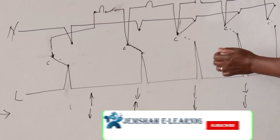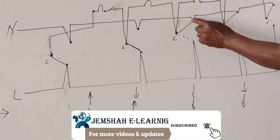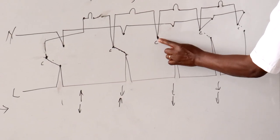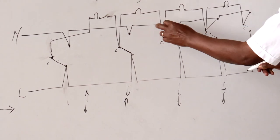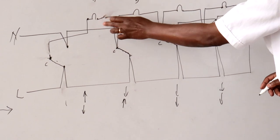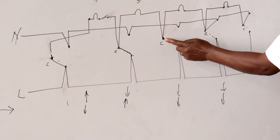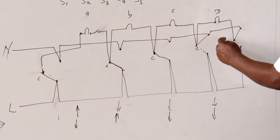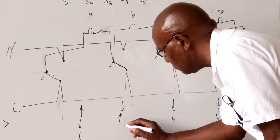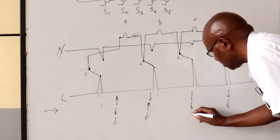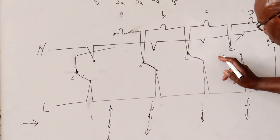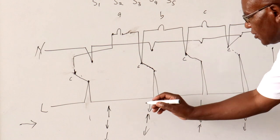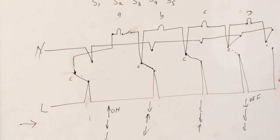Then I move to the next switching position. The path for lamp B to the neutral was through that switching connection. When I flip this one over, lamp B automatically goes off. The live passes through to the common terminal, and lamp C comes on through its connection back to the neutral. So lamp C is the one that is switched on at this stage.